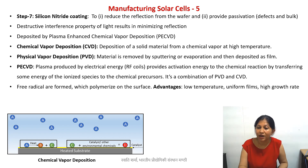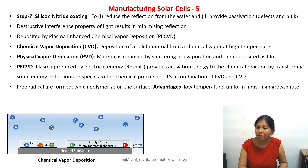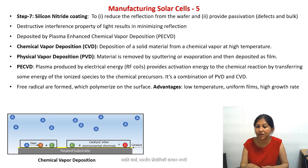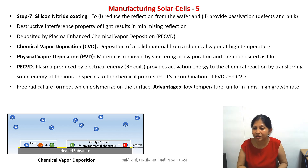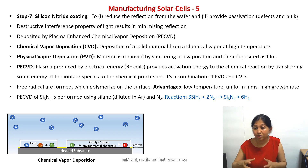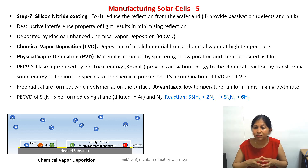In PECVD, that activation energy is provided by the plasma, so we don't need higher temperatures — that is advantage number one. Number two: you also have more uniformity in the films and relatively higher growth rates. When your device includes other parts of electronic circuitry, such as metal contact pads, you want to avoid high temperatures that could melt something and later cause a short circuit. That is especially relevant in photovoltaics, where PECVD is typically used.